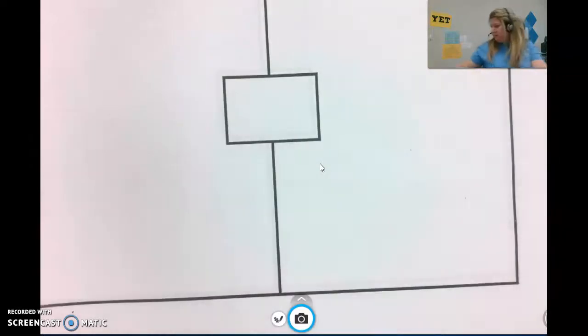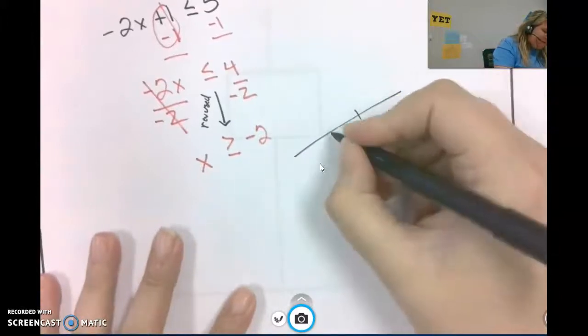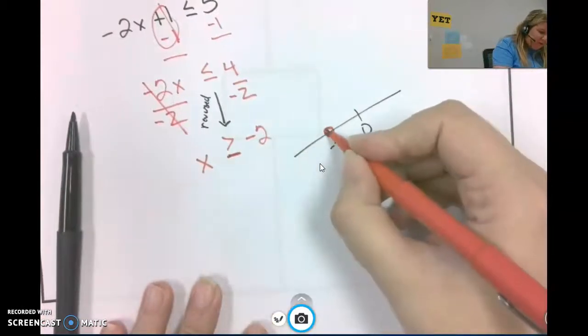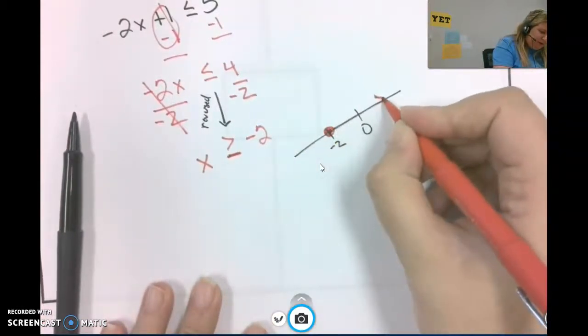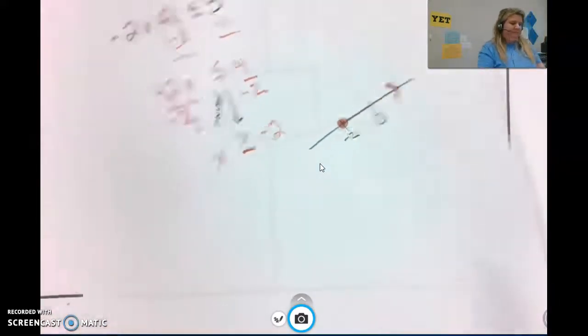So, oh, I forgot to graph that. Better graph it. Okay. Zero. This time we're at negative 2. We are including negative 2 because if it were equal to. And then we're talking about all the numbers that are greater than. Okay.